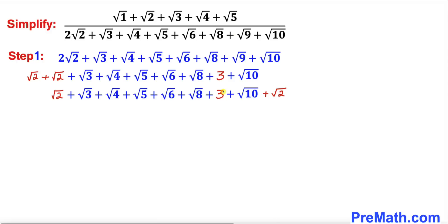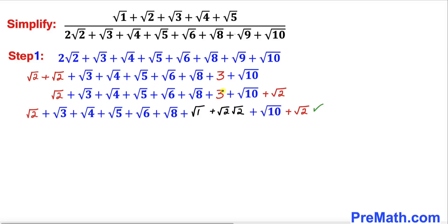I have moved that square root of 2 to the very end. Now let's focus on this 3 — we are going to tweak it. I'm going to write 3 as 1 plus 2. Then 1 can be written as square root of 1, and 2 can be written as square root of 2 times square root of 2. So I have replaced the 3 by square root of 1 plus square root of 2 times square root of 2.